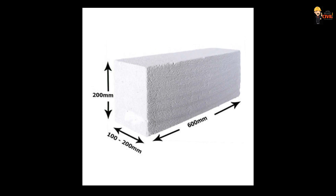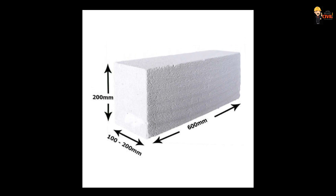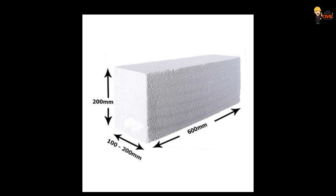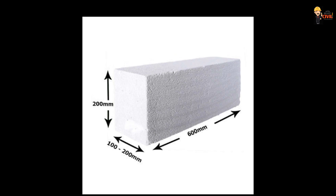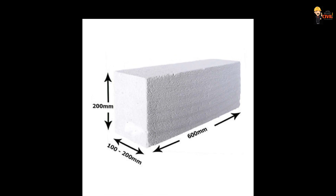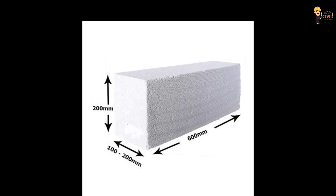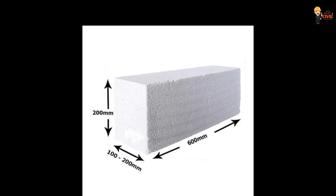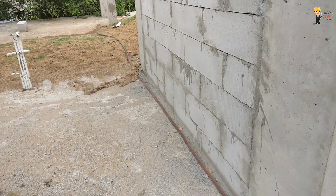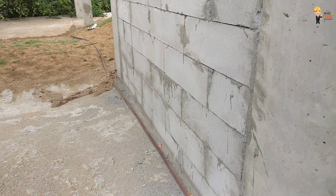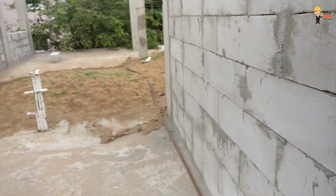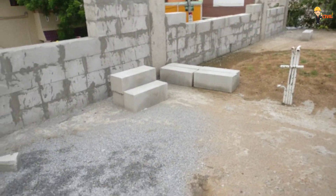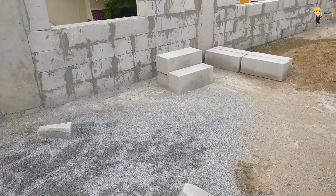These are the manufacturing details of AIC blocks. These blocks contain air pores, making it a very different material compared to brick masonry. It is a great material.